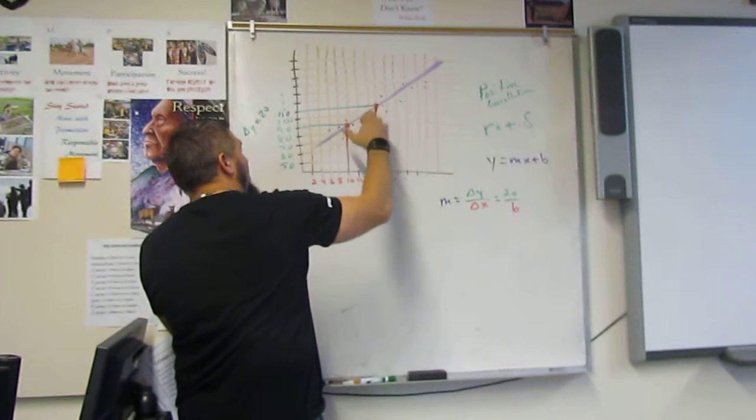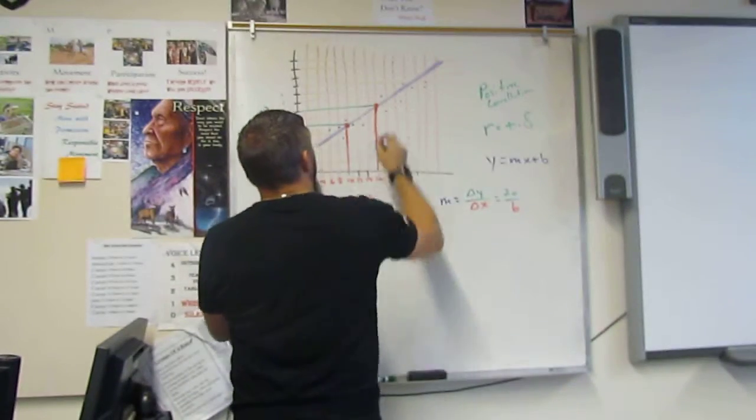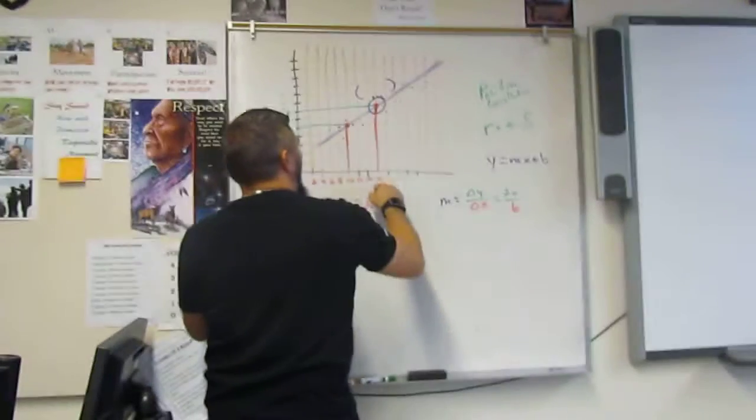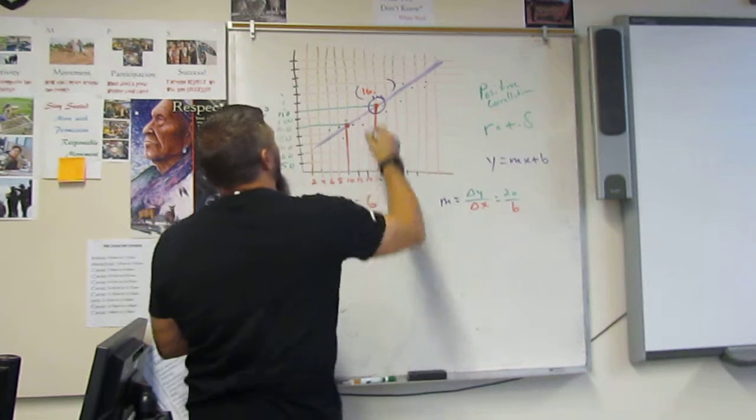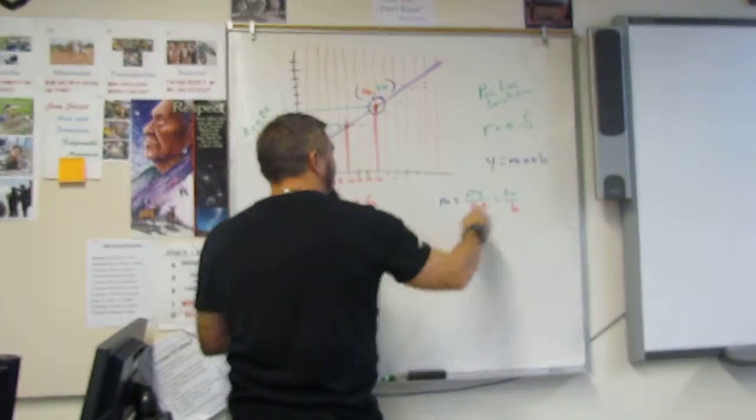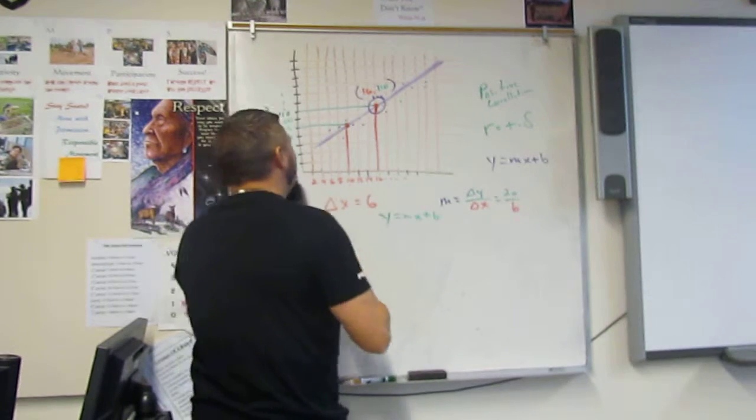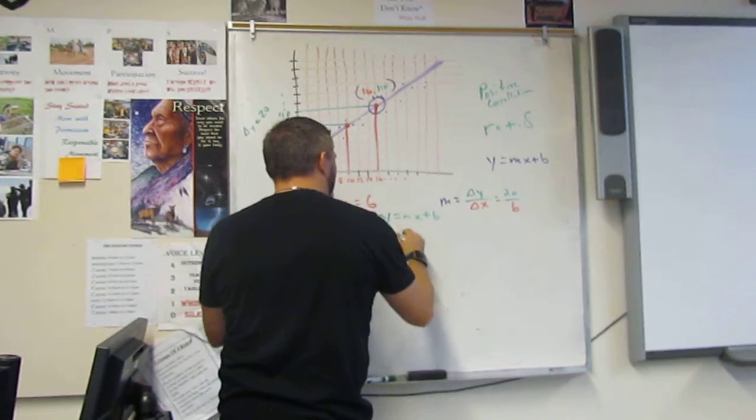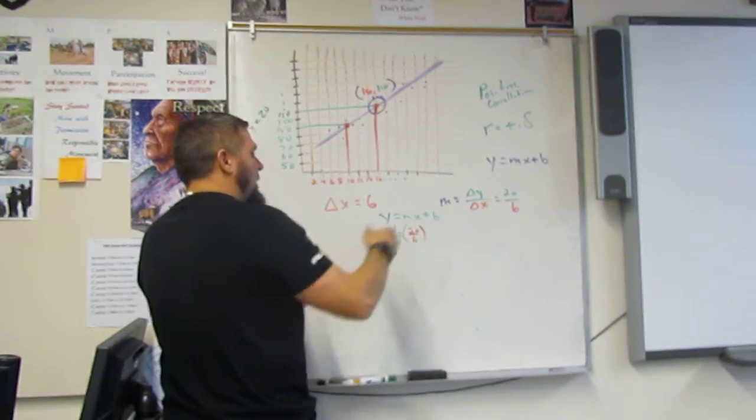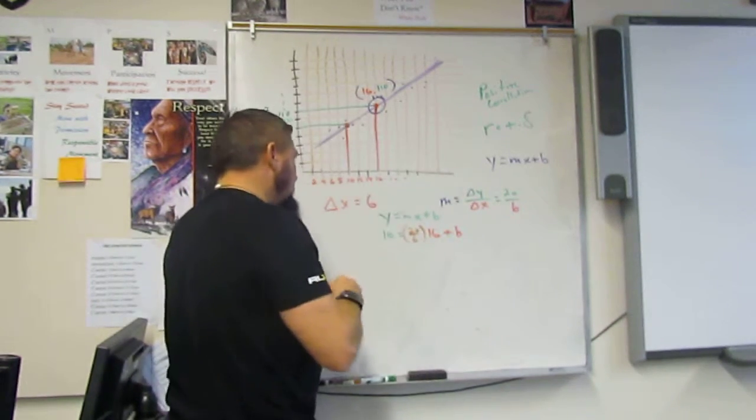So we're going to grab one of these points. Do you want the lower one or the bigger one? Bigger. So we'll grab this guy up here. And we have coordinates. The X coordinate is 16. The Y coordinate is 110. So that's your X and your Y. So you have Y equals MX plus B. So we just plug it in. Y is 110, M is 20 over 6, and X is 16 plus B.